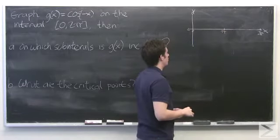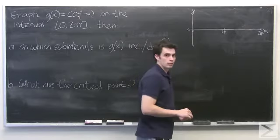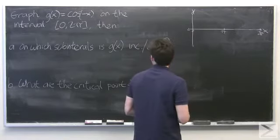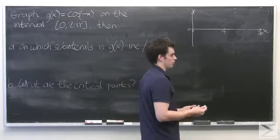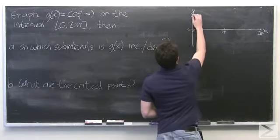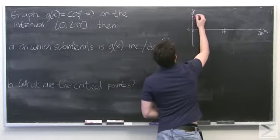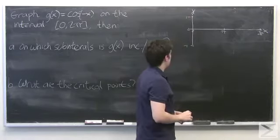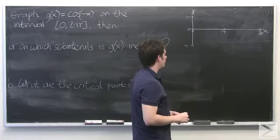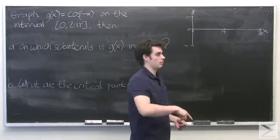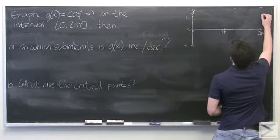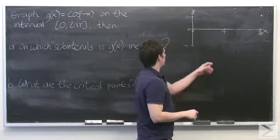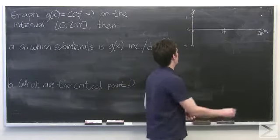So the easiest way to go about doing this is just start plugging in some values and see what we get. We'll start with 0, cosine of negative 0 is the same as cosine of 0, which is just 1. And then the same will be true of 2 pi. Cosine of negative 2 pi is the same as cosine of 2 pi, which is just 1. And the cosine of negative pi is negative 1.